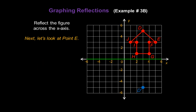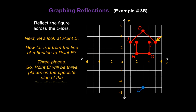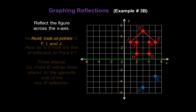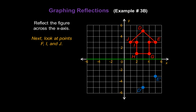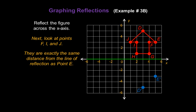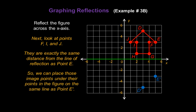Next, let's look at point E on our figure. How far is it from the line of reflection to point E? It's three places up, so point E prime will be three places on the opposite side — count down three places. That's our point E prime. Now take a look at points F, I, and J — they're exactly the same distance from the line of reflection as point E. So we can place those image points at the same level as point E prime. This will be point F prime, this will be point I prime, and this will be point J prime.